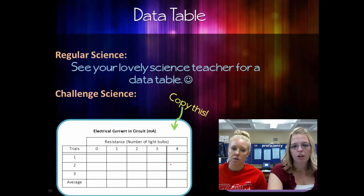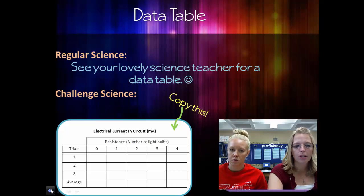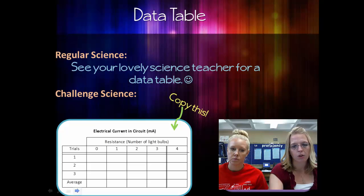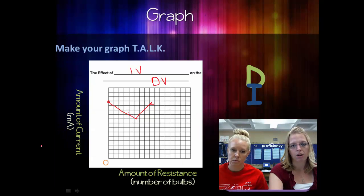We are graphing only the averages. We always graph the averages only, not each individual trial. So you will have five dots on this graph and you'll connect them with a line. If you don't connect them, it's not a line graph.